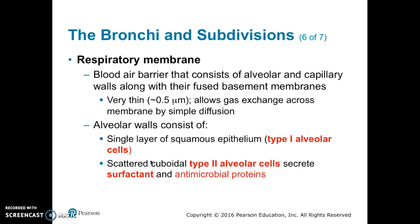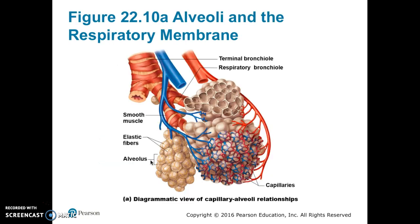The alveolar walls also have scattered cuboidal epithelial cells, or type 2 alveolar cells. These cells secrete surfactant and antimicrobial proteins.